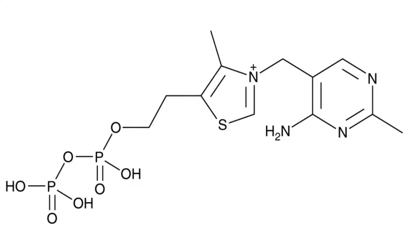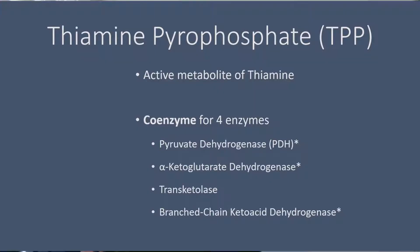Thiamine pyrophosphate, or TPP — also called thiamine diphosphate — has the same structure as thiamine but with two phosphate groups attached. It is the active metabolite of thiamine and acts as a coenzyme for four enzymes. All four of these enzymes play significant roles in our metabolic pathways.